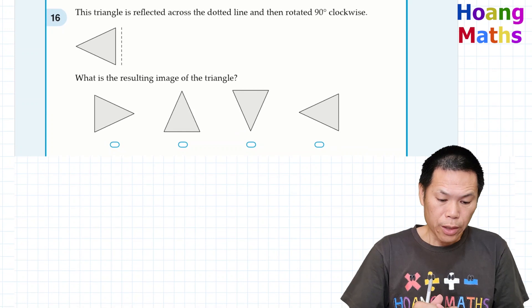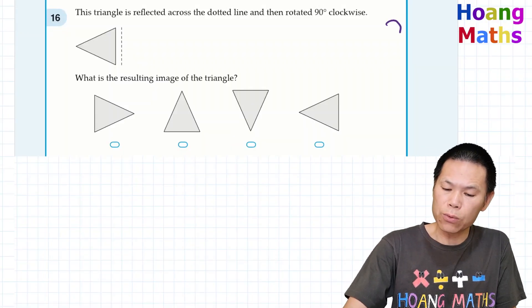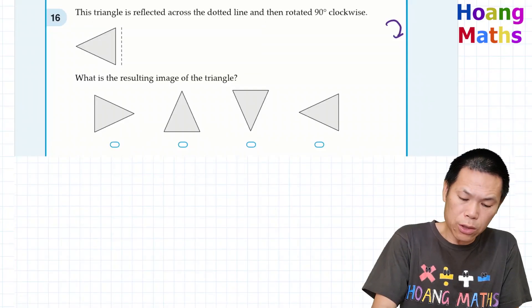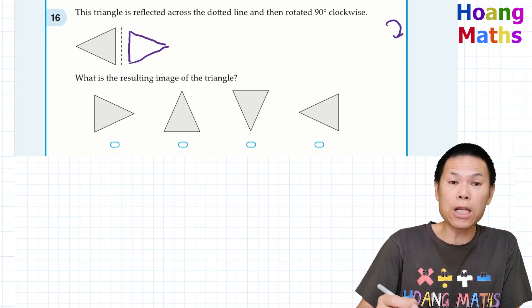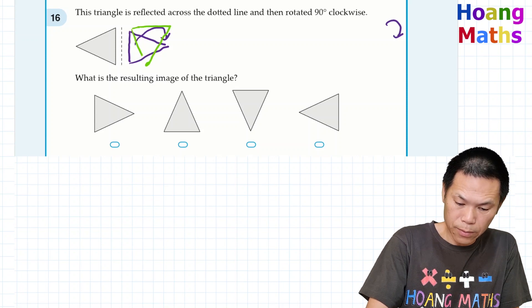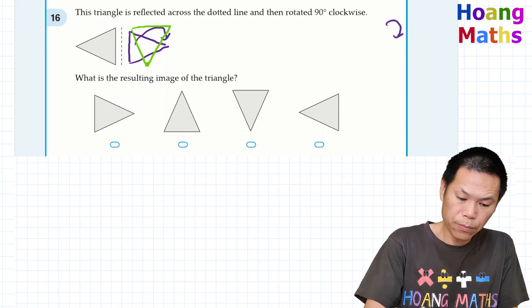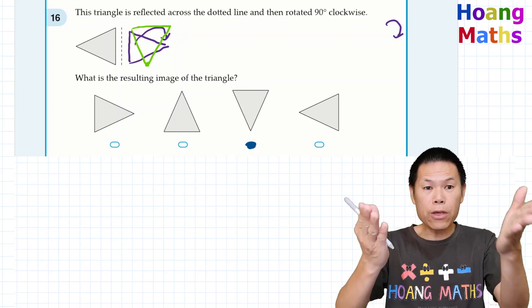Last one: this triangle is reflected across the dotted line and then rotated clockwise. Clockwise means it goes this way. First, reflecting across the dotted line flips the triangle. Then rotating 90 degrees clockwise gives the final position. Therefore, the answer is shape C.